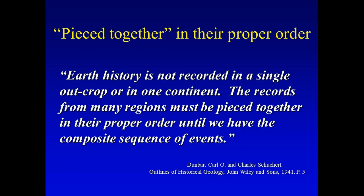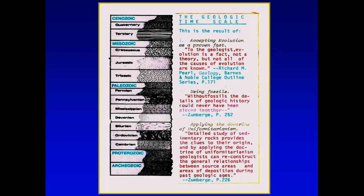So here again is the geologic timescale. John Clark and I put this together — there are really three things that resulted in this column. One is that to the geologist, evolution is a fact, not a theory, even though not all the causes of evolution are known. I found this in the Barnes & Noble College Outline Series, which would take the top 25 geology books used in universities and simplify them, keying each section to those textbooks. So this concept was held across all those geology books.